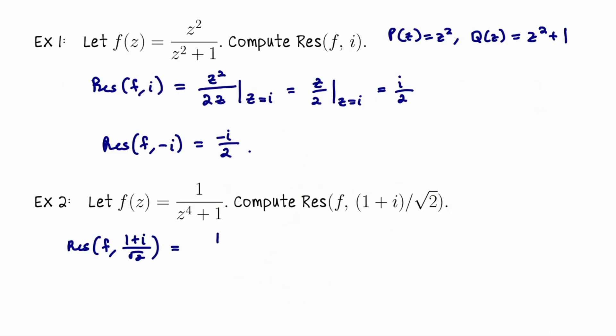Here P of z is actually the constant 1, and then the derivative of the denominator is 4z cubed. We want to evaluate that at our pole. That's going to be 1 over 4 times that number cubed. The algebra at this point is not too interesting. We've plugged in. That number cubed is actually going to simplify to negative 1 plus i all over the square root of 2.